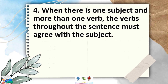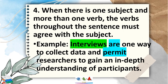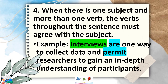Rule 4: when there is one subject and more than one verb, the verbs throughout the sentence must agree with the subject. For example, 'Interviews are one way to collect data and permit researchers to gain an in-depth understanding of the participants.' The subject is 'interviews,' which is plural, thus it takes plural verbs: 'are' and 'permit.'